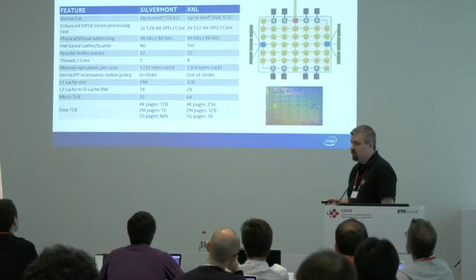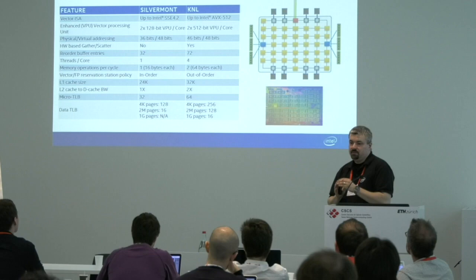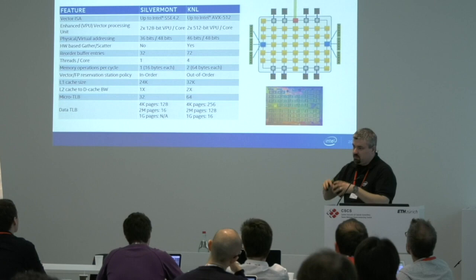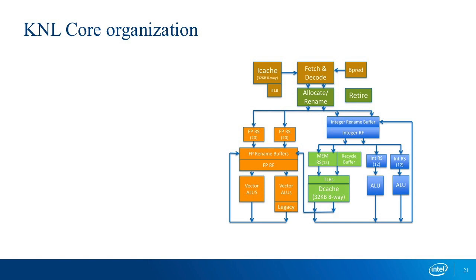The individual cores are based on Atom technology, with considerable extensions to make it suitable for HPC. The VPUs are integral to the core architecture — not separate units. If you compare to a Broadwell pipeline, this is a lot simpler. The Xeon pipeline is where Xeon gets its single-thread performance — it's a much more complicated beast.